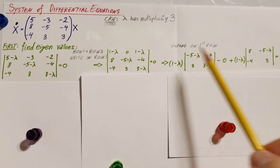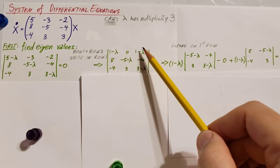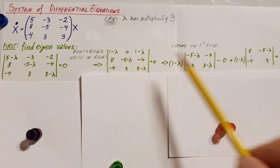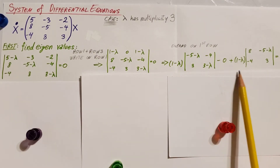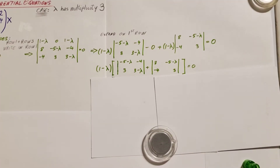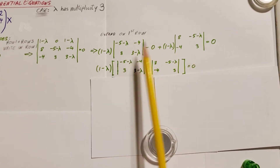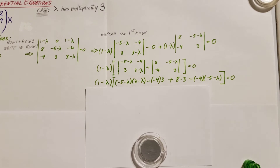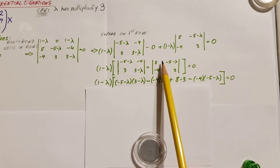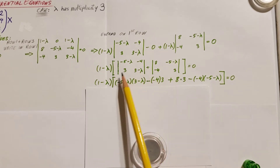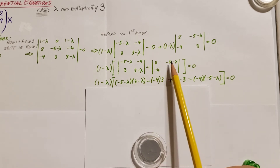Plus one minus lambda times the determinant of what you have left if you cross this and this out. Now, since this and this repeats, I'm going to factor it out. So one minus lambda times whatever was left in the parentheses gives us these two determinants. Now we actually solve the two determinants — this one and this one. It's this times this minus this times this, for both of them.